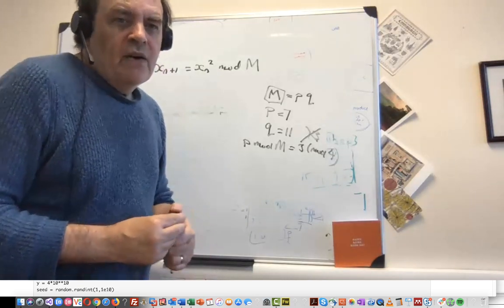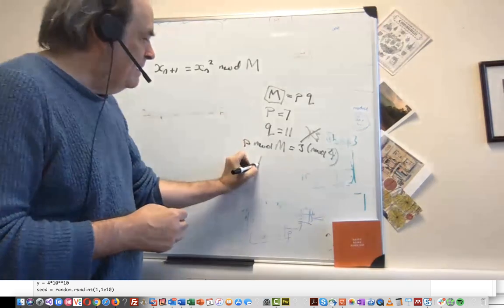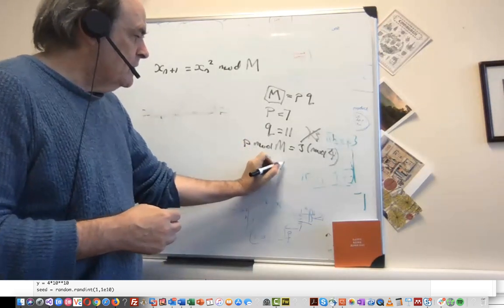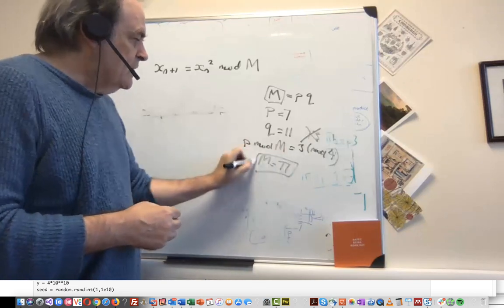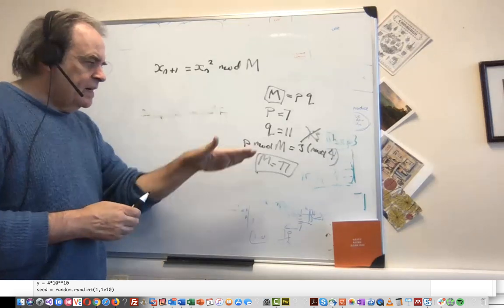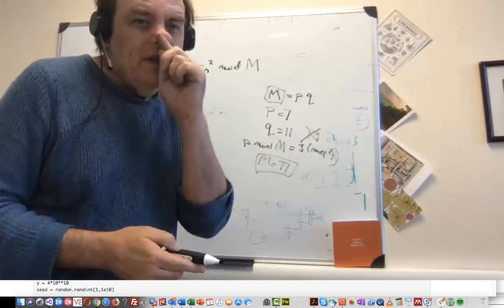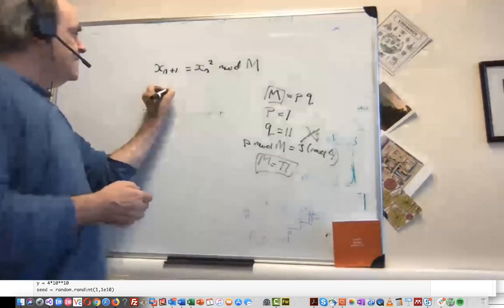So we start off with a random seed. In this case, m will be equal to 77, so the maximum value that we can actually create from here will be between 0 and 76. Now what we do is we start with a random seed.